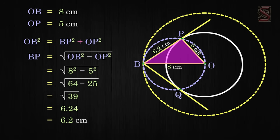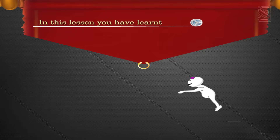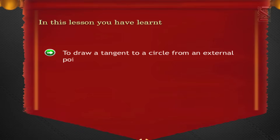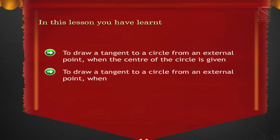Similarly, BQ equals 6.24 cm. In this module you have learned to draw a tangent to a circle from an external point when the center of the circle is given, and to draw a tangent to a circle from an external point when the center of the circle is not given.